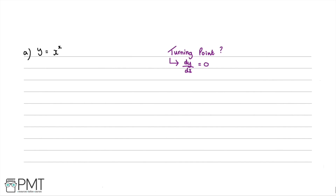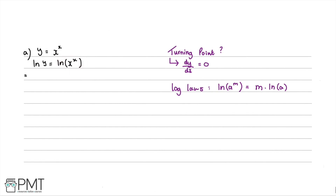We have y = x^x, so writing underneath we have ln(y) = ln(x^x). Using the exponent log law, ln(a^m) = m·ln(a), we can bring the exponent x in front of the log term. Therefore ln(y) = x·ln(x).